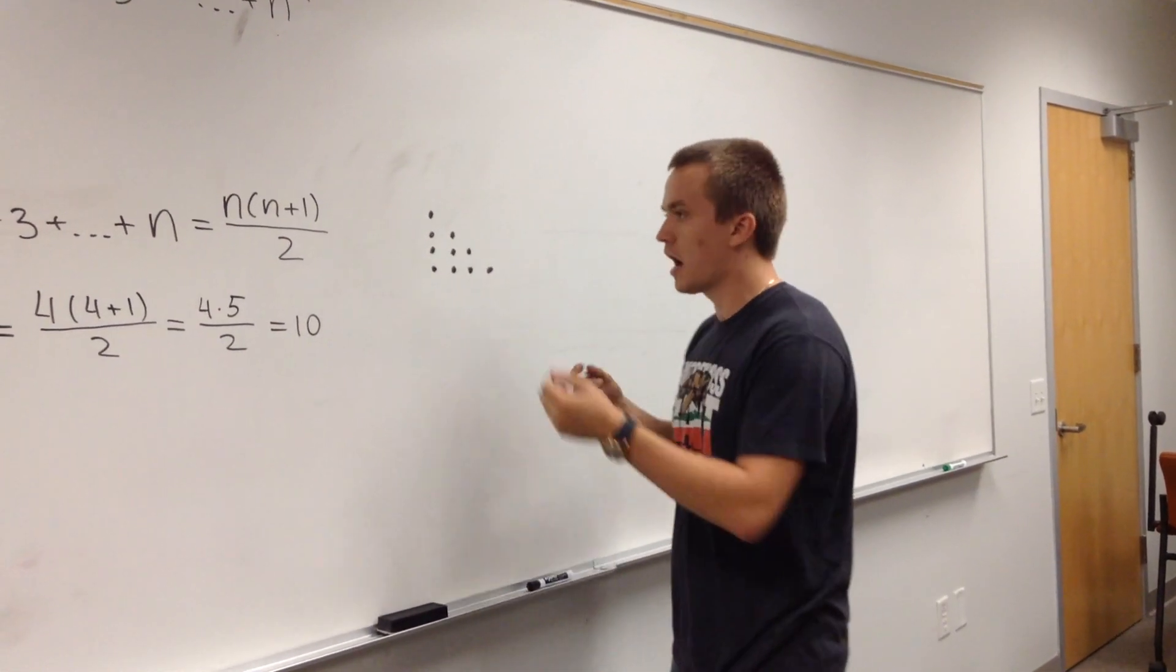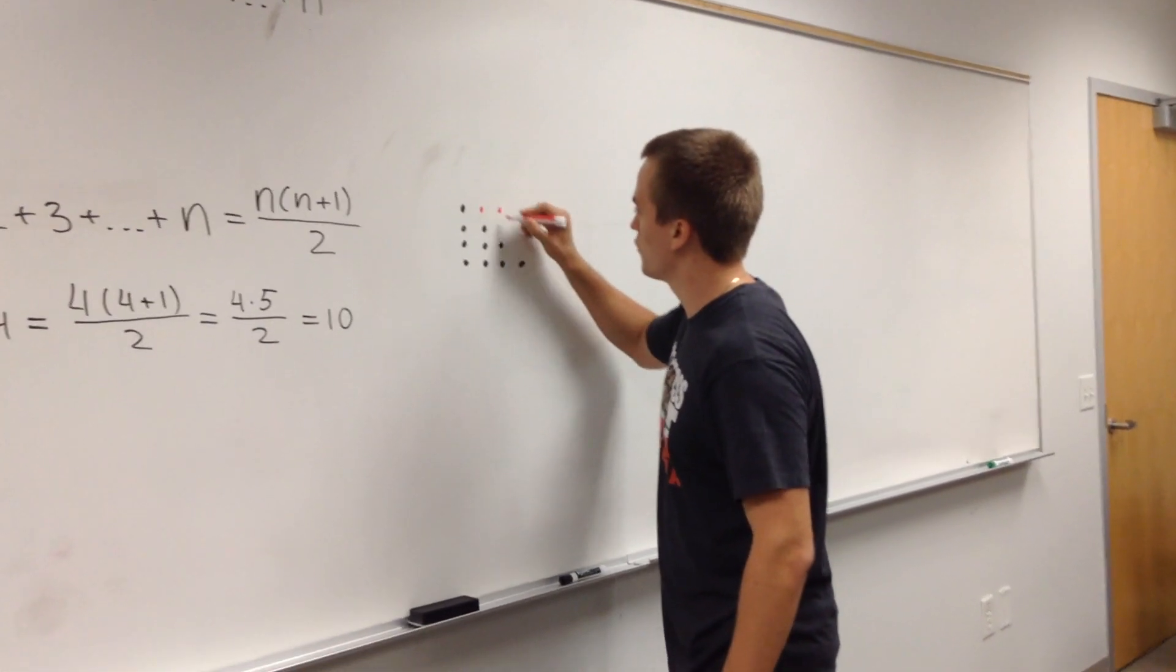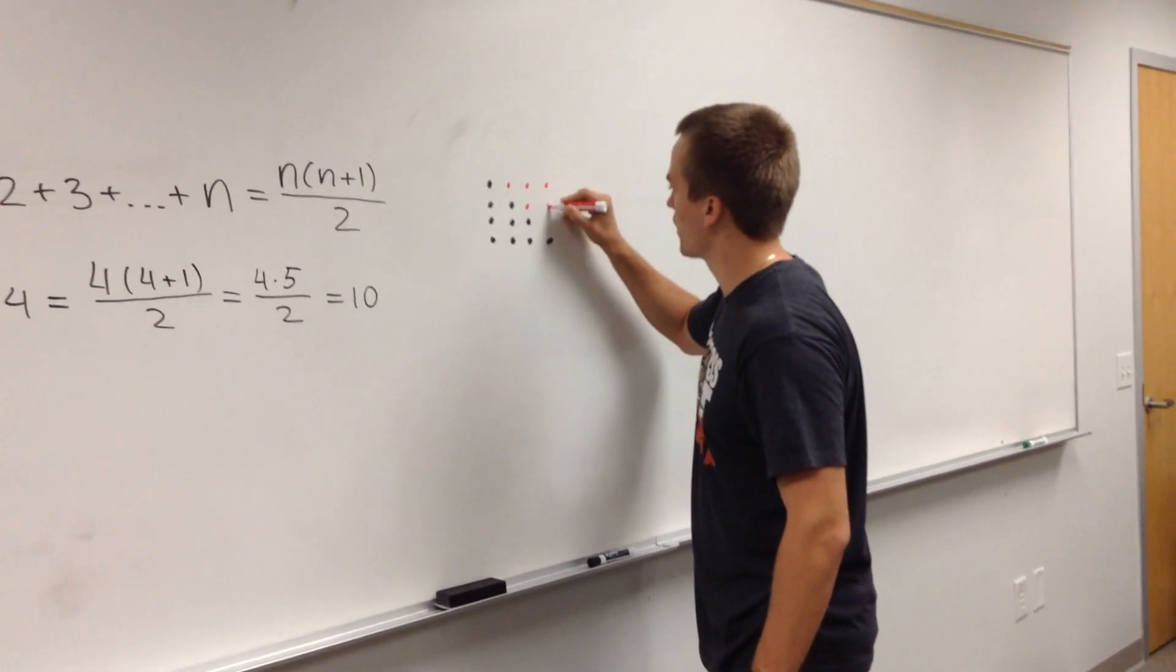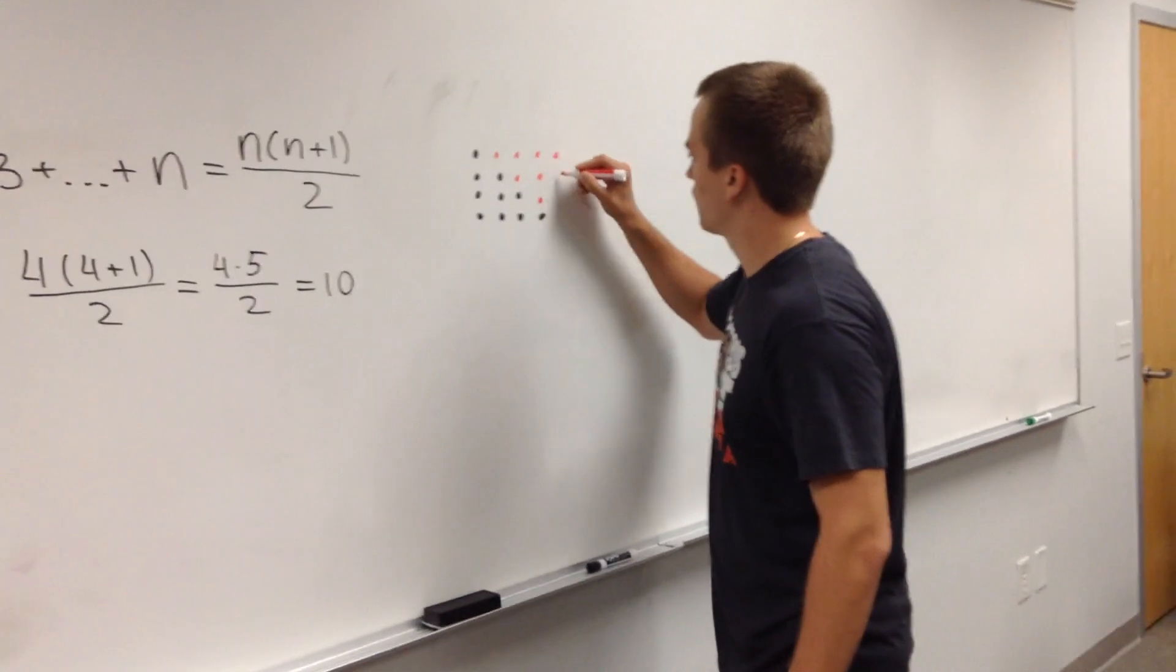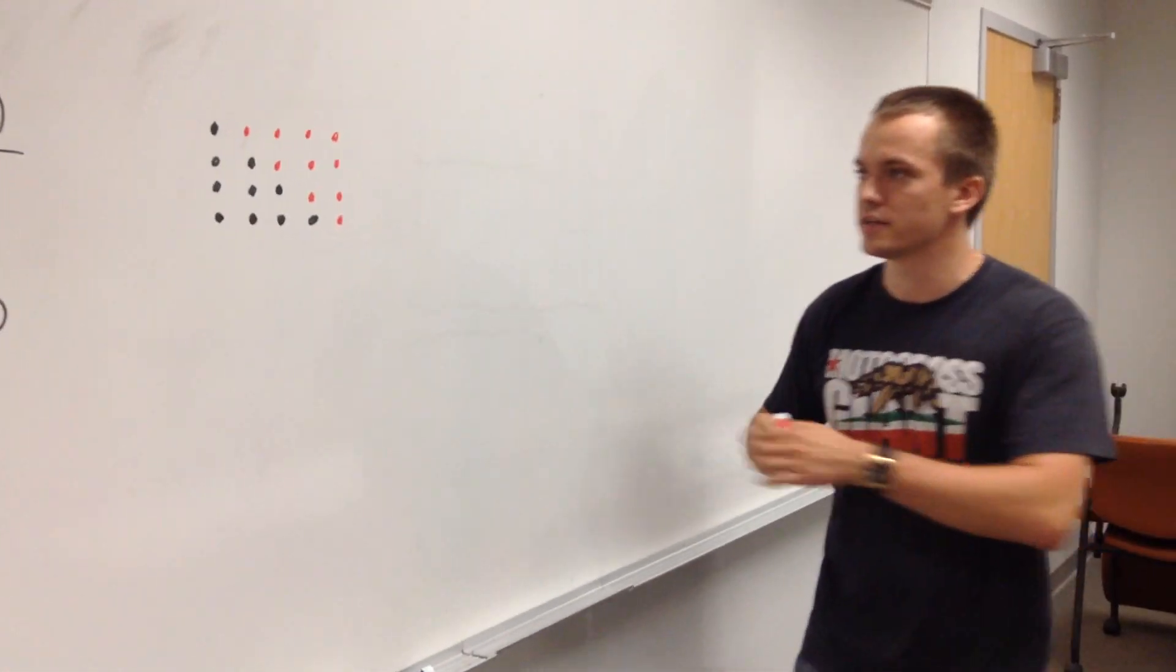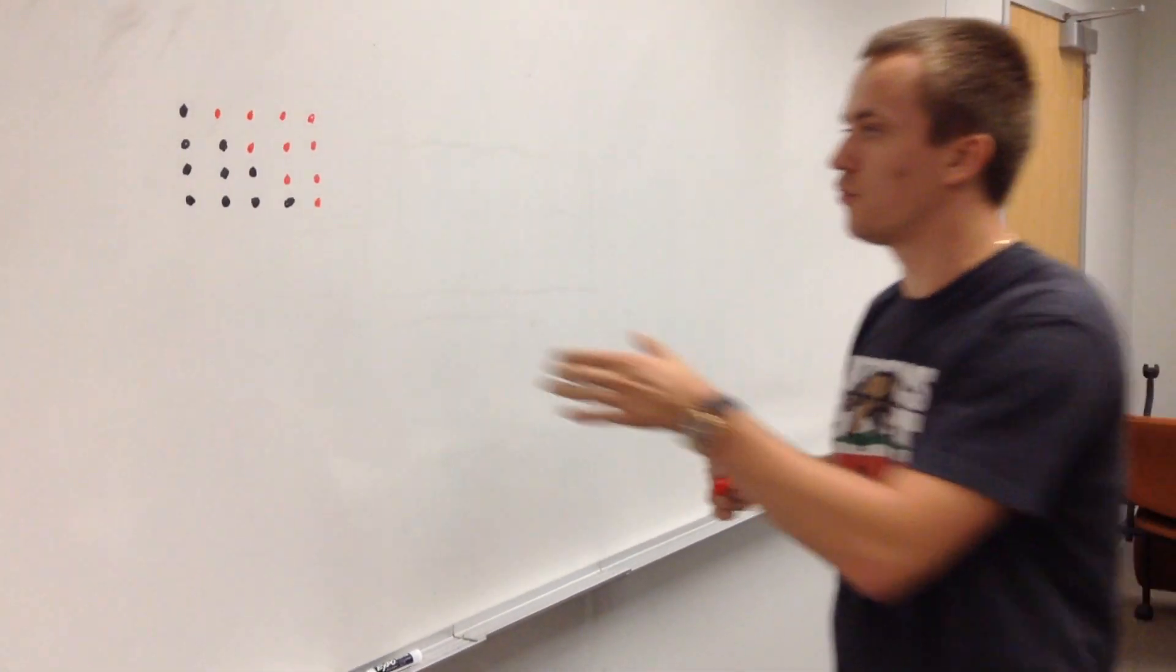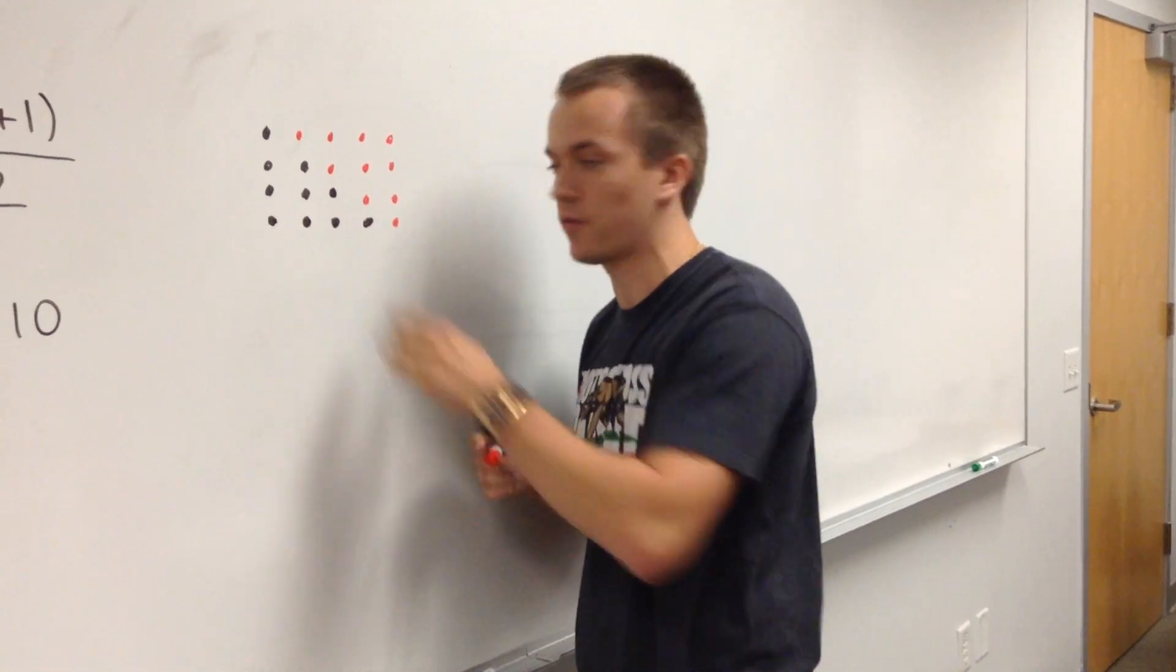So in this case what I'm going to do, I'm going to add the same amount of points. So we'll add red points here, 2 red points here, 3 red points here, and 4 red points here. And so right now you can see instead of triangle, I have a rectangle.